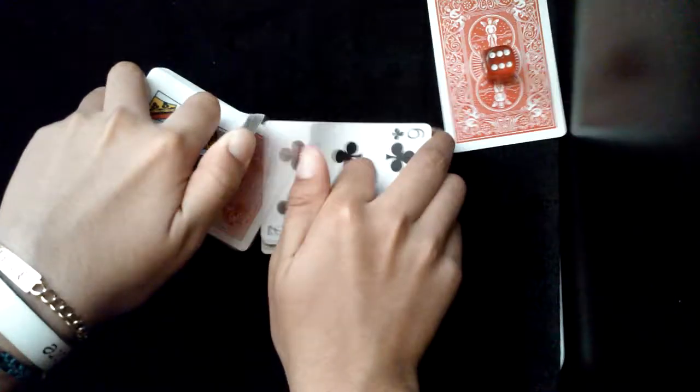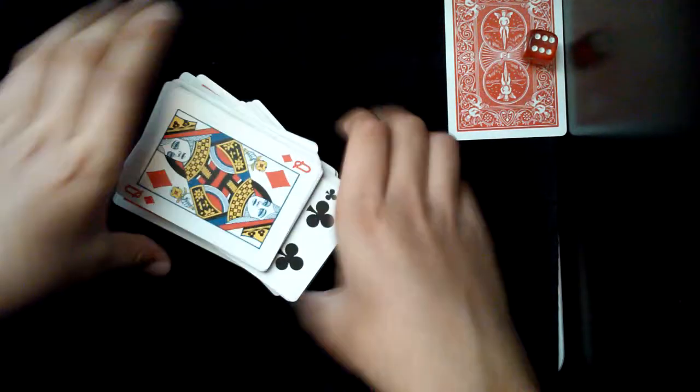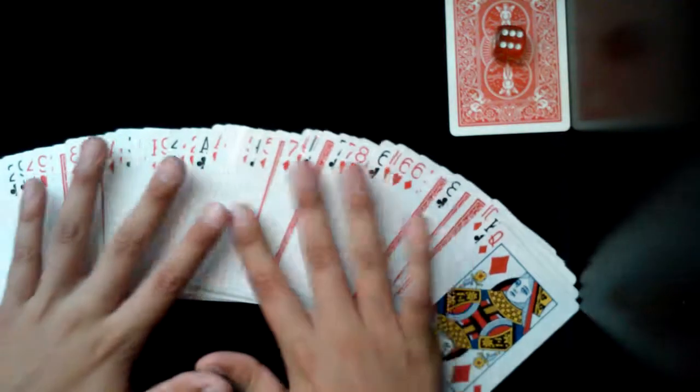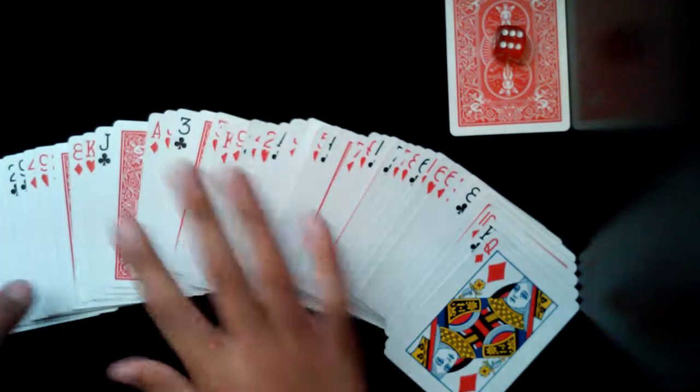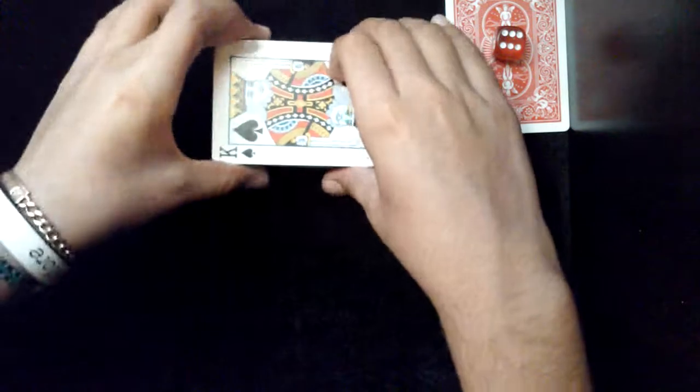Right, so I'll give them another quick shuffle like this, like that. You can actually see that some are facing up and some are facing down just like that. Now put the deck right there.